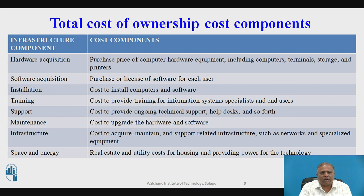Hardware acquisition: the purchase price of computer hardware equipment including computer terminals, storage, and printers. Software acquisition: the purchase or license of software for each user. Installation: the cost of installing computers and software. Training: cost to provide training for information system specialists and end-users. Support: cost to provide ongoing technical support, help desk, and so forth. Maintenance: cost to upgrade hardware and software. Infrastructure: cost to acquire and maintain networks, special equipment, space, and energy. Real estate and utility costs for housing and providing power for the technology.